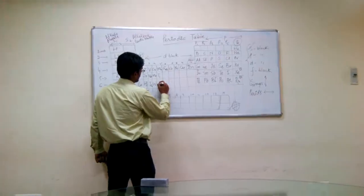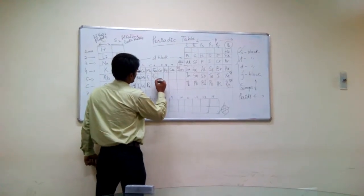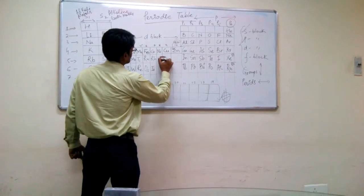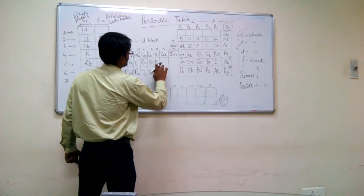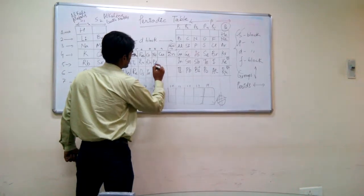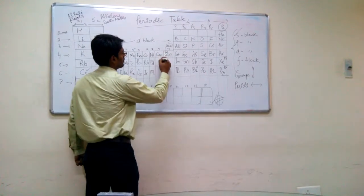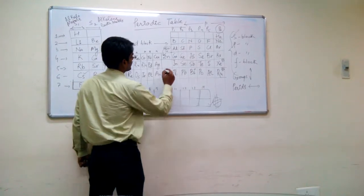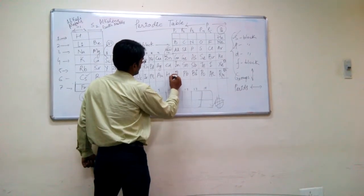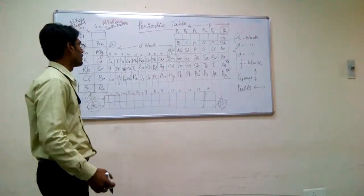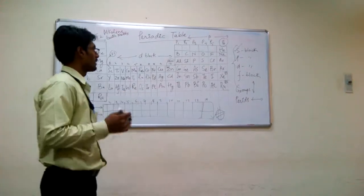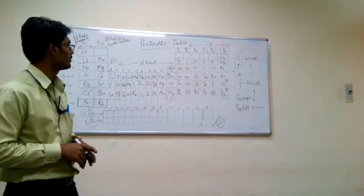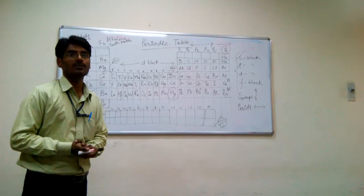Then we have lanthanum, hafnium, tantalum, tungsten, rhenium, osmium, iridium, platinum - very precious - then gold, another important one, and then mercury, a liquid metal at room temperature, very important. Mercury rules the whole physics as well as chemistry for so many centuries. This metal mercury is used for purification of other elements as well as for temperature measurement.